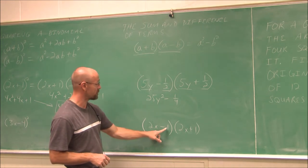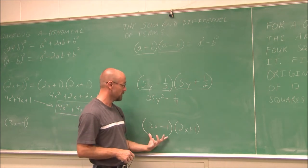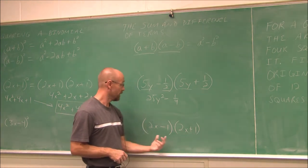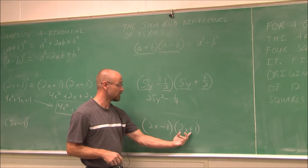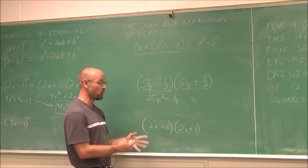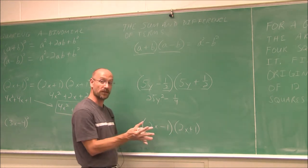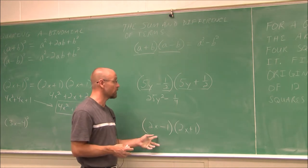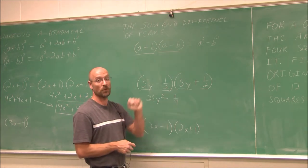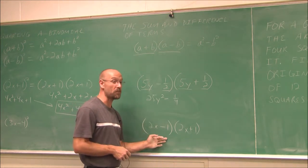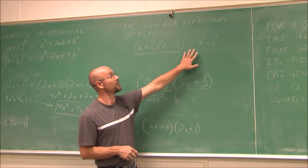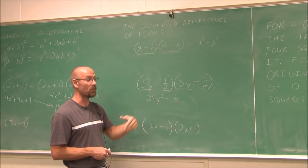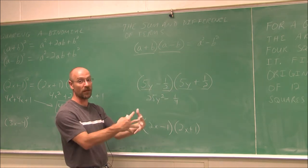For (2x − 1)(2x + 1): recognize that these are conjugates, and you could FOIL it out to see the middle term cancel. Or just use the formula and commit it to memory. You'll see this pattern many, many times as you progress through math.